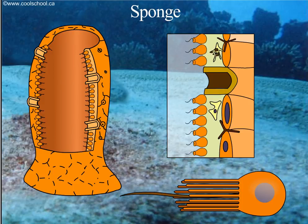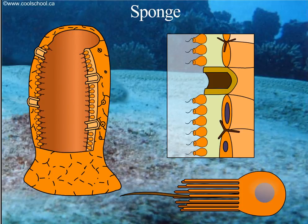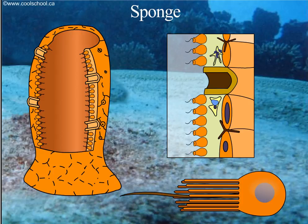From here, the amoeboid cells act as a simple circulatory system and transport the nutrients and oxygen to other parts of the sponge. The amoeboid cells then transport carbon dioxide and waste from the other parts of the sponge back to the ectoderm.